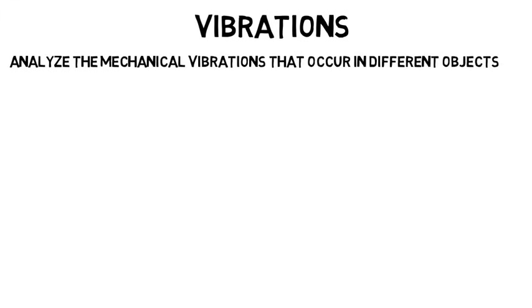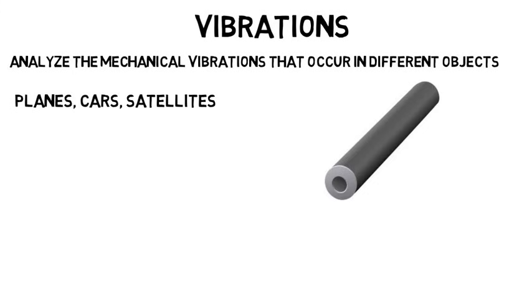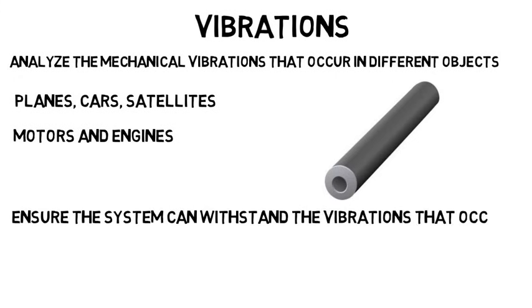You'll then take a vibrations class, where you'll analyze the mechanical vibrations that occur in different objects. Think about if you were to drop a metal object. When it hits the ground, you might observe or even hear it vibrating. In mechanical systems like planes, cars, satellites, and more that are moving, but also contain parts like motors and engines that are also moving at very high speeds, it's important to analyze the system even down to the vibrations to ensure the system can withstand those vibrations that occur.